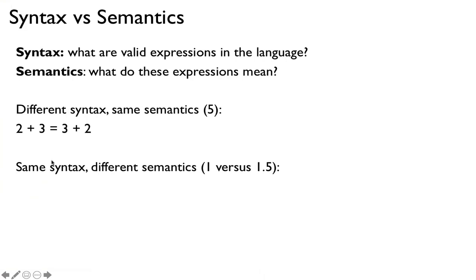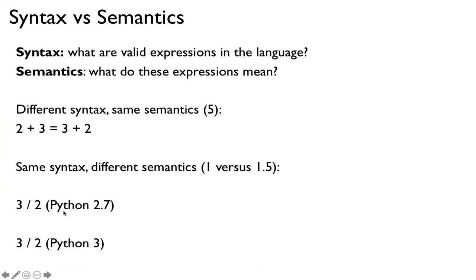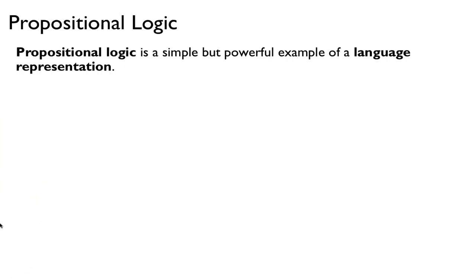Here's an example where syntax is the same but semantics is different. In Python 2.7, '3 divided by 2' uses floor division, so the result is 1. In Python 3, '3 divided by 2' is true division, giving 1.5. So even though the syntax is the same, the semantics is different depending on which Python version you're using.